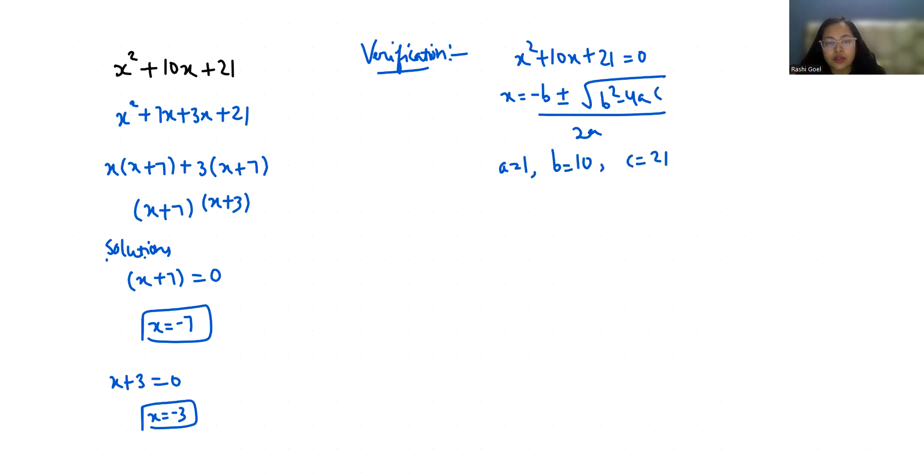So x = (-10 ± √(10² - 4(1)(21))) / 2(1). So -10 ± √(100 - 84) / 2. So -10 ± √16 / 2.